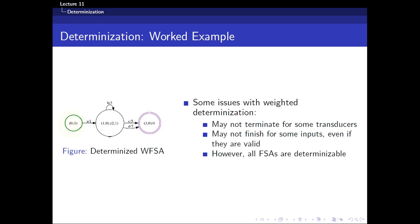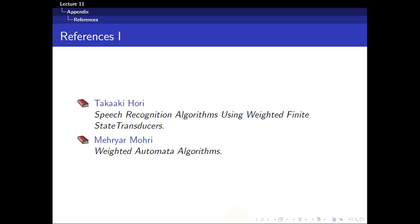We can now recover the determinized form of the finite state acceptor. One caveat is that for some transducers this algorithm may not terminate, even if there are no epsilon transitions. The good news is that all finite state acceptors are determinizable. There are other properties that guarantee a transducer to be determinizable, which won't be covered here. For further reading, refer to the book 'Weighted Automata Algorithms' by Mohri. Thank you, and I hope to see you in the next lecture.